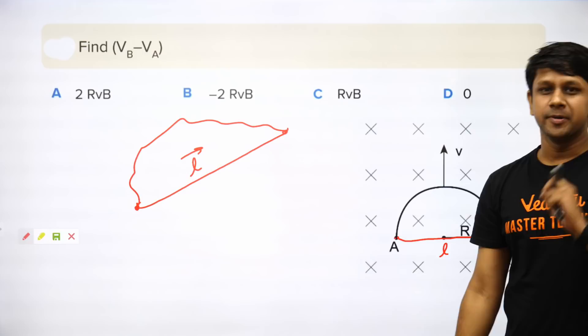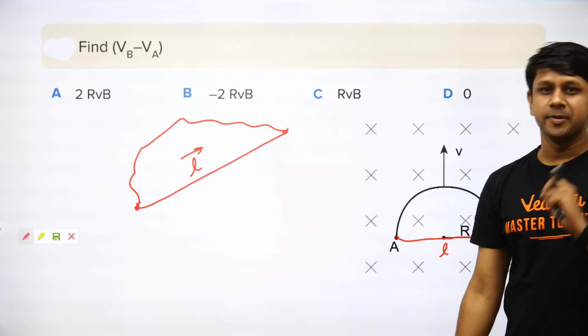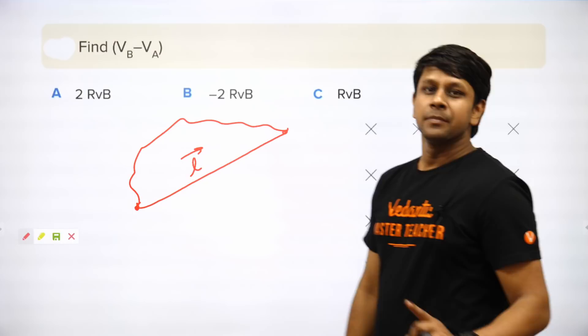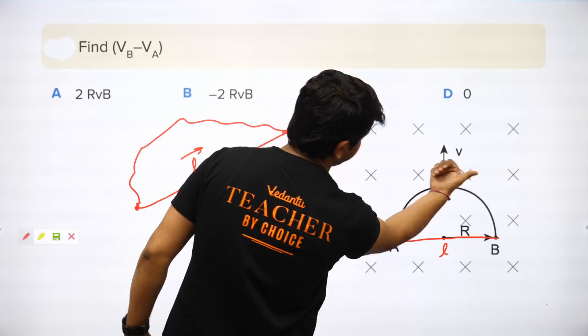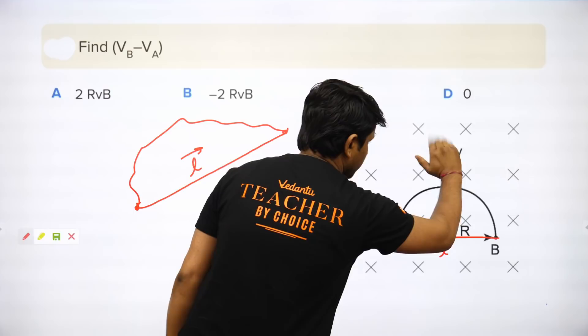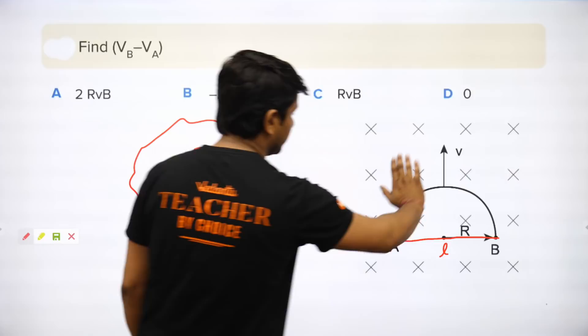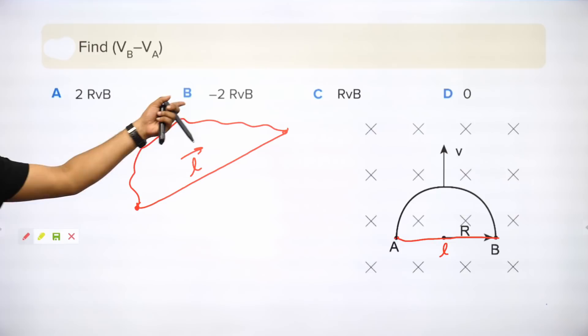Instead of a straight rod, there is a semicircular rod. Remember from Magnetism — when we calculated force on a random-shaped wire, we joined the initial point and final point and used that straight length as the effective L vector. The same logic applies here: join the initial and final points, and that becomes your effective length L. The answer is A, which is 2RVB. Those who said B made an error in the sign.